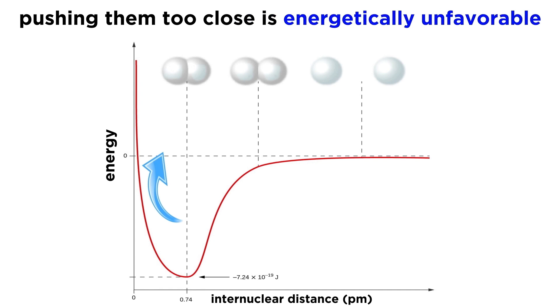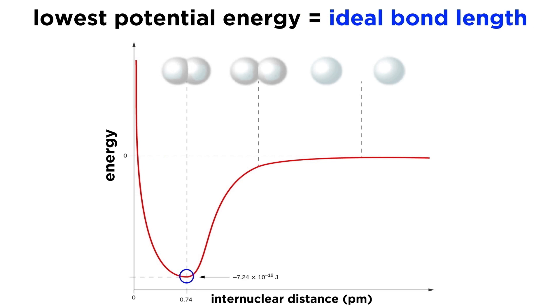But if they get too close, the positively charged nuclei will repel one another, and potential energy sharply increases, like trying to push together two magnets of like charge. Thus, there is an ideal internuclear distance that allows for a minimization of potential energy, and that will be the ideal covalent bond length for two hydrogen atoms, which happens to be 74 picometers.